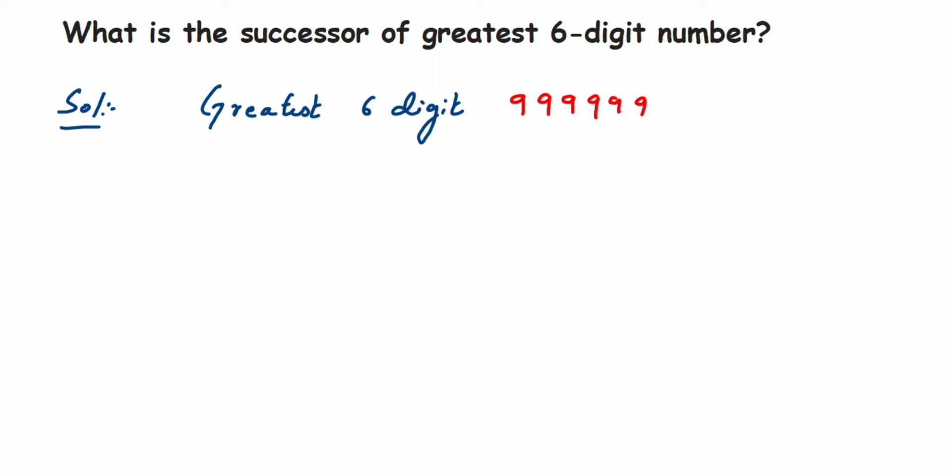Every digit will be 9, so this will be the greatest six-digit number, which is nothing but 9,99,999. Now here we are asked to find out the successor. Successor means the immediate next number of this.